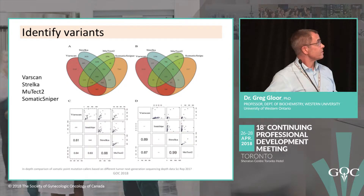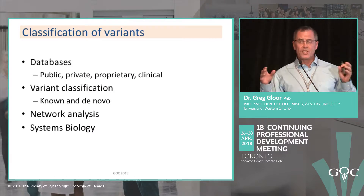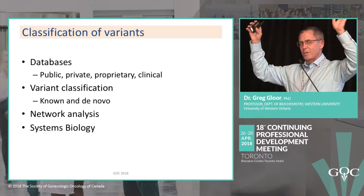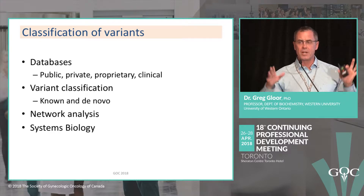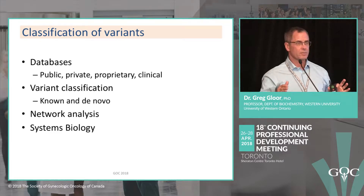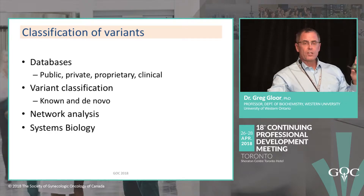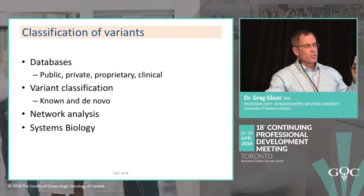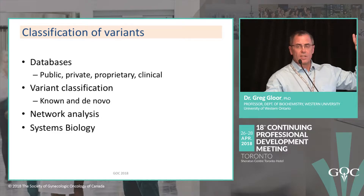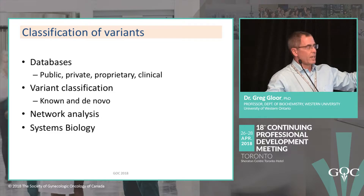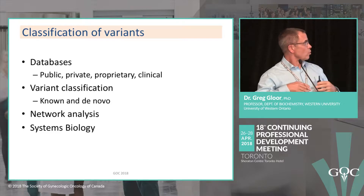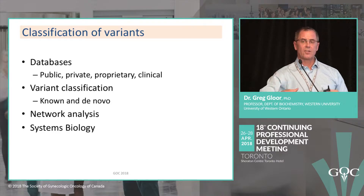Let's assume our mappers and variant callers work perfectly and we have a set of variants. We want to determine what those variants tell us about the tumor. We'll use classification: comparing variants against known databases, doing de novo classification, and ultimately working towards network analysis to understand what's happening in the system.